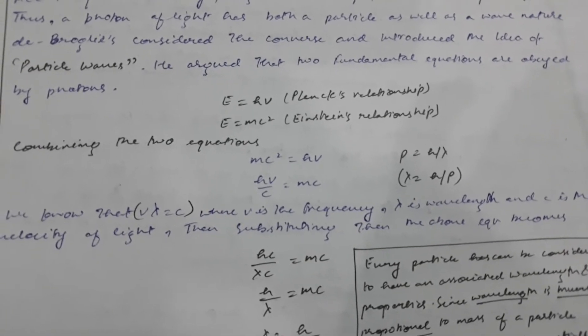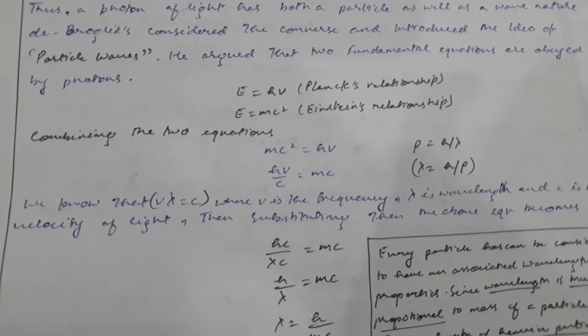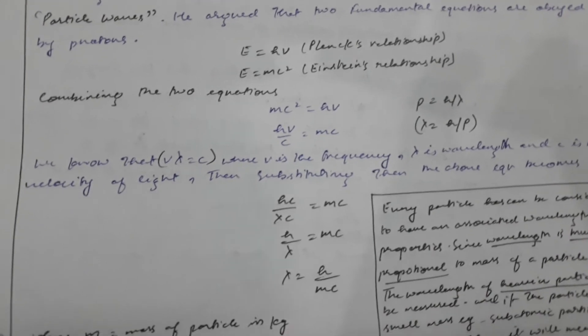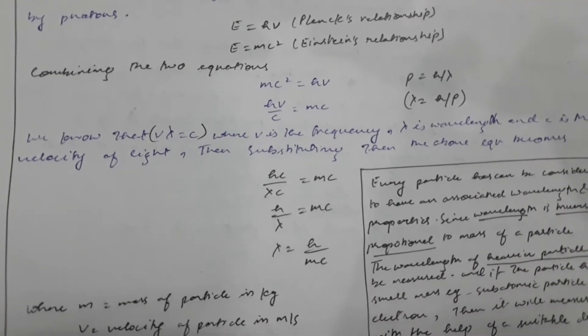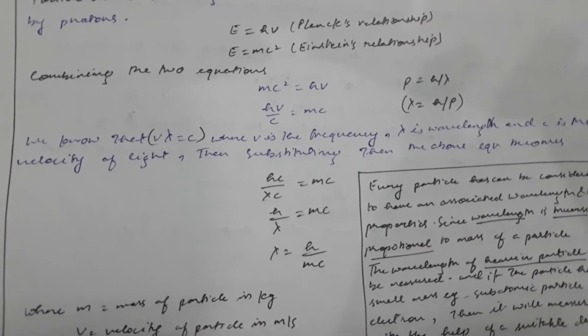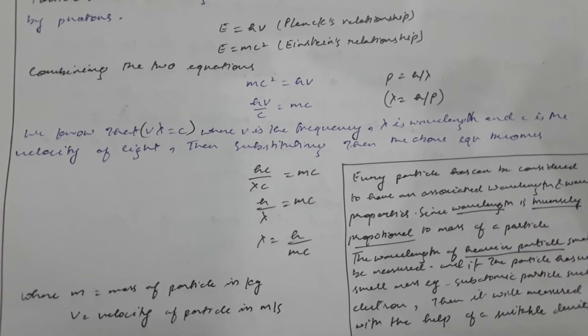The first equation is E equals hν, where h is Planck's constant. The second is E equals mc squared, Einstein's relationship. Combining the two equations, mc squared equals hν, therefore hν over c equals mc, where p equals h by lambda.